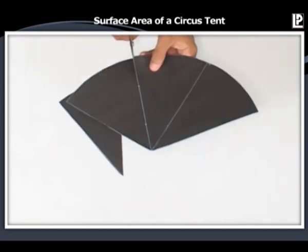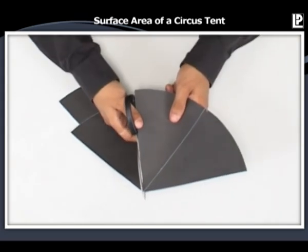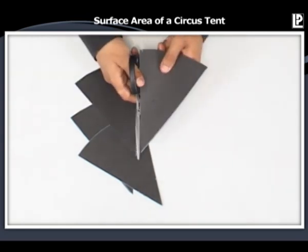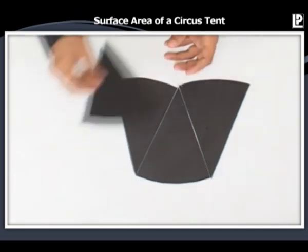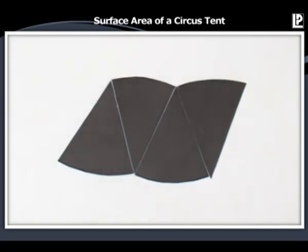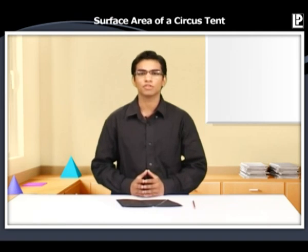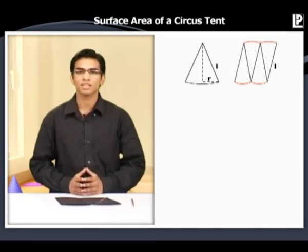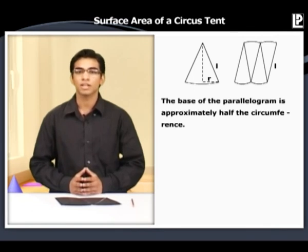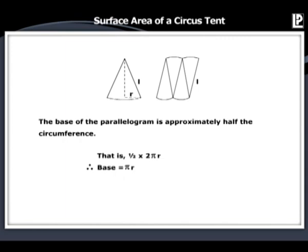We've divided it into four equal small sectors. We can divide this sector into more equal sectors, which are always even in number. As you can see, these sectors almost look like triangles. Let's place these sectors next to each other. The shape we have got now is almost a parallelogram. This means that the curved surface area of a cone is the same as the area of this parallelogram. The height of the parallelogram is roughly the slant height of the cone, equal to L. These two bases of the parallelogram together form the circumference of the base of the cone. So the base of the parallelogram is approximately half the circumference, that is 1/2 times 2πr. Therefore, base is equal to πr.